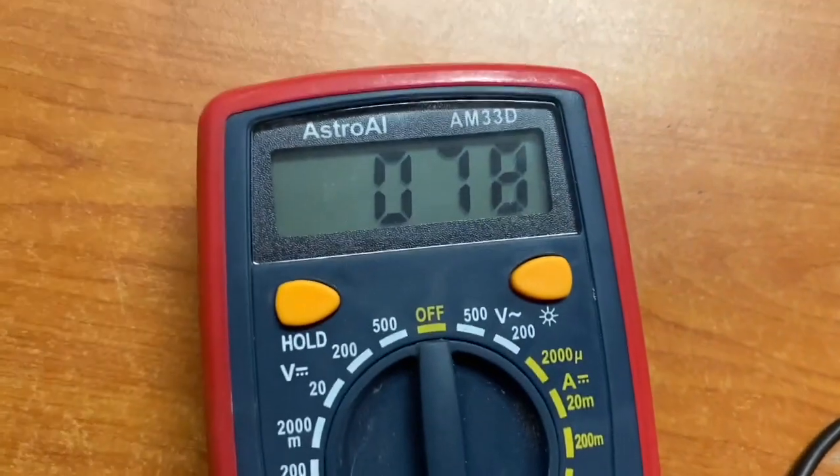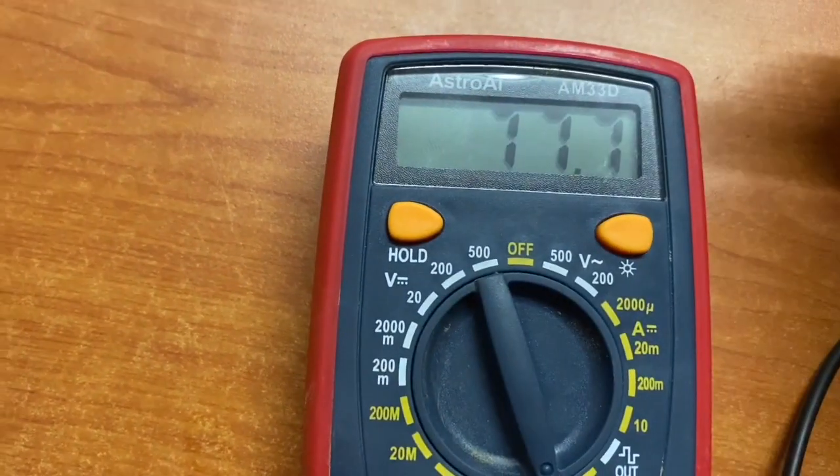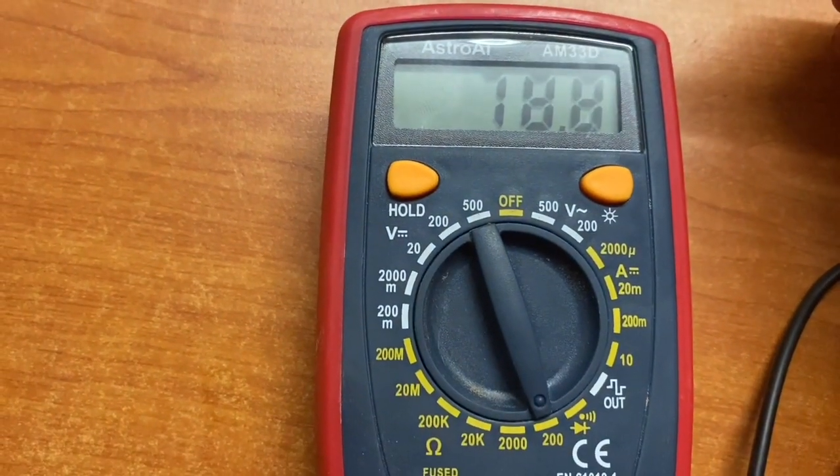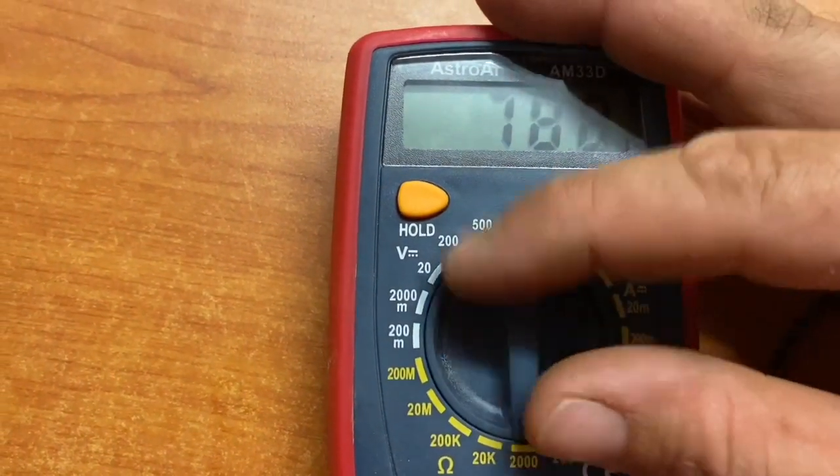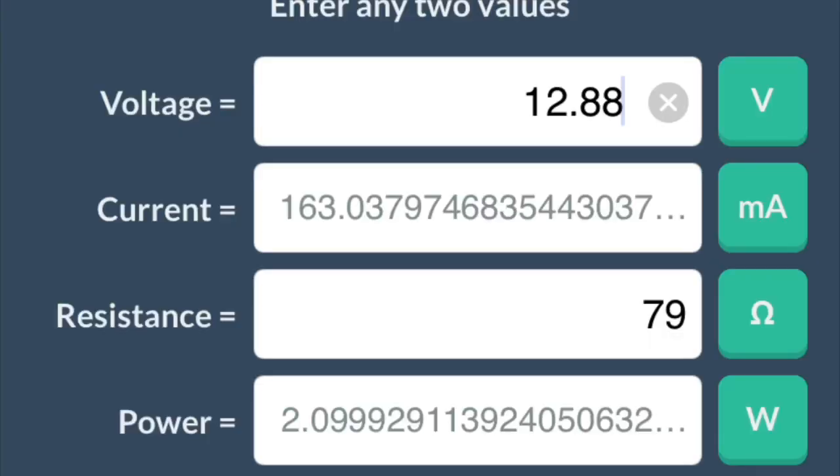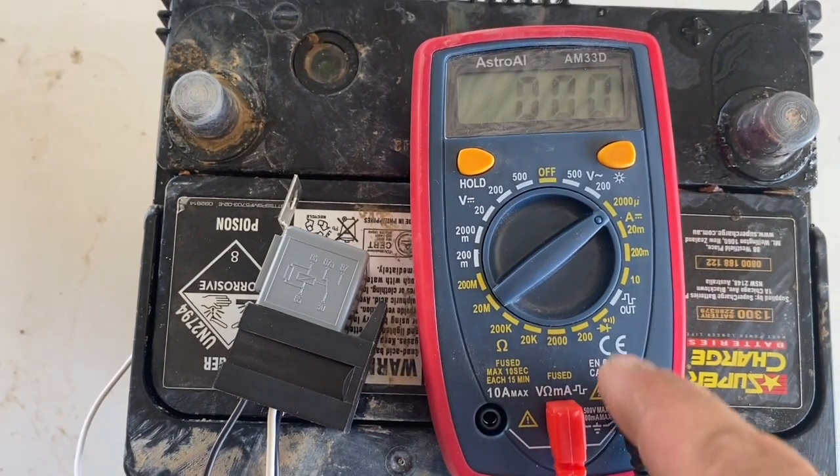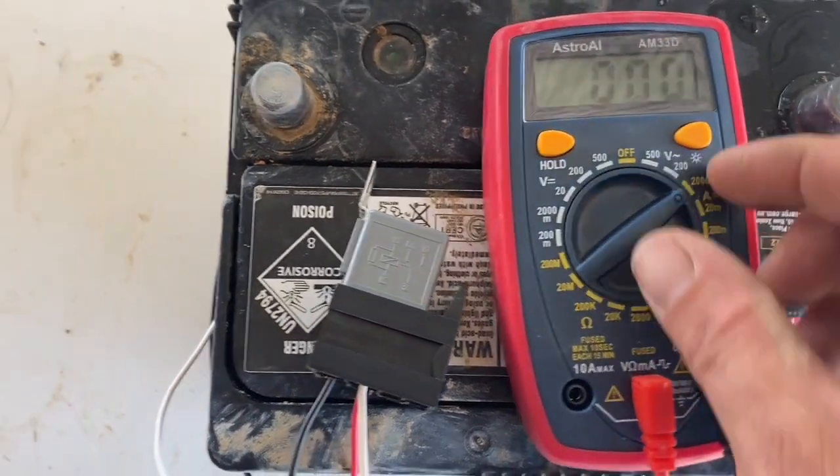So we type 79 ohms into our calculator at 12.88 volts and get 163 milliamps. So that's how much current draw this relay should produce when it latches, and we're going to fact check that now.